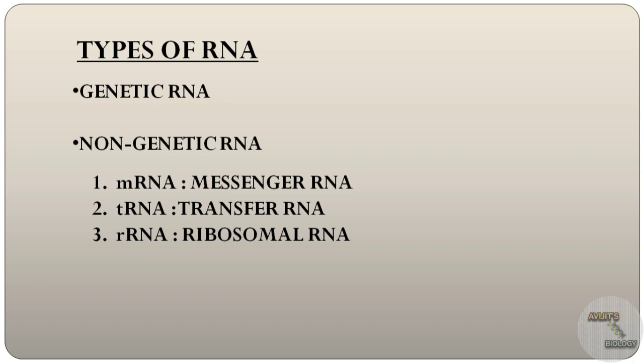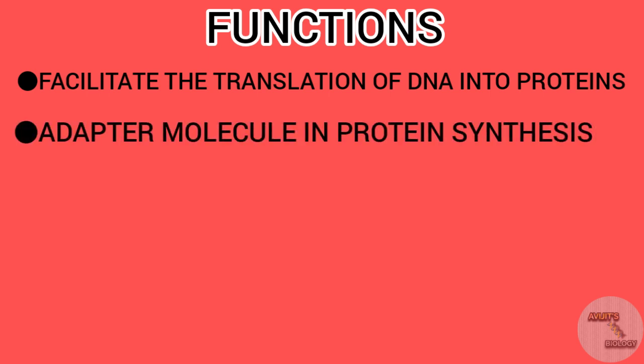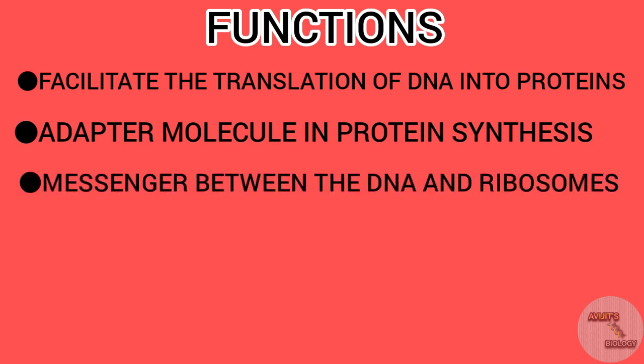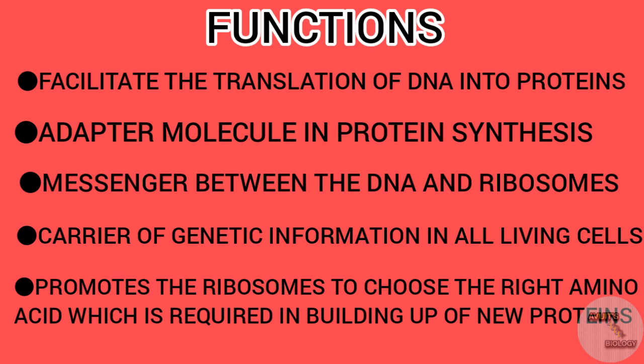Various types of rRNAs have various types of functions, and these are: RNAs facilitate the translation of DNA into proteins. RNA functions as an adapter molecule in protein synthesis. They serve as a messenger between the DNA and the ribosome. RNAs are the carrier of genetic information in all living cells. RNA promotes the ribosomes to choose the right amino acid which is required in building up of new proteins in the body. So these are the functions of RNA.